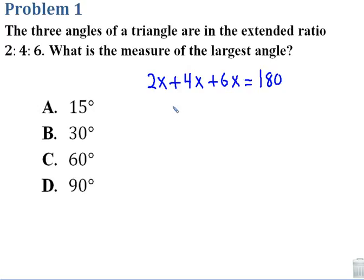Solving this equation, 2 plus 4 plus 6 is going to give us 12. So we have 12x equals 180. Divide both sides by 12, we end up with x equals 15. Notice multiple choice time, 15 is a solution here. A lot of students will be tempted to, hey, we got a number, we got the answer, circle that.